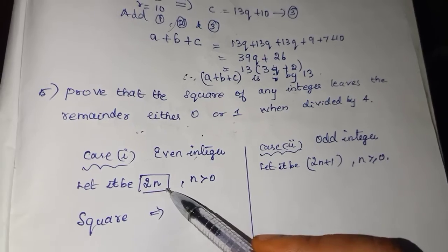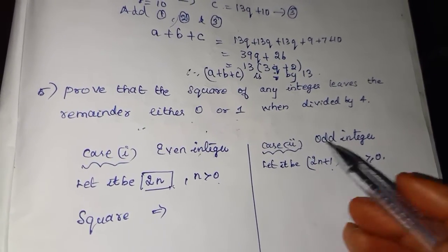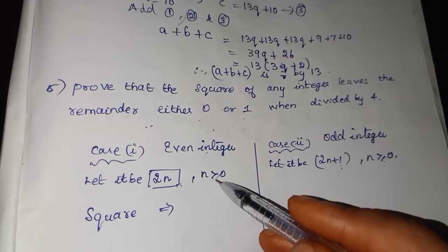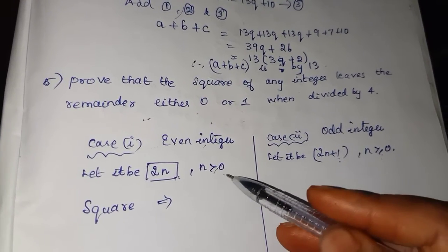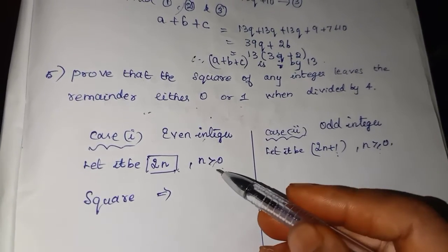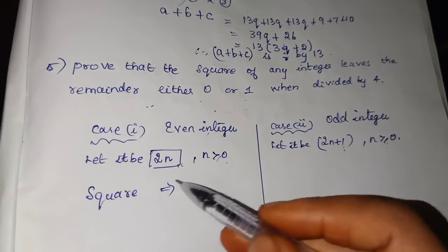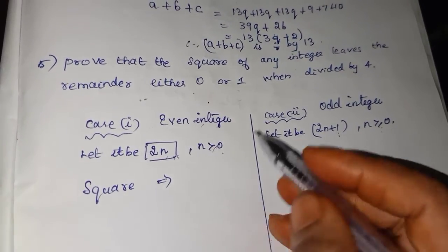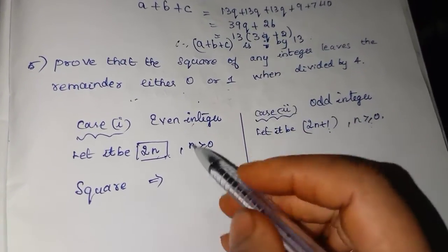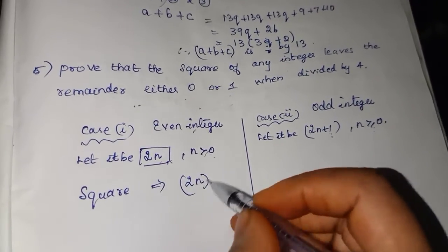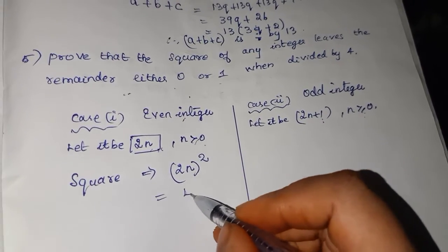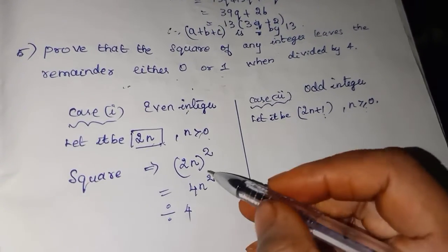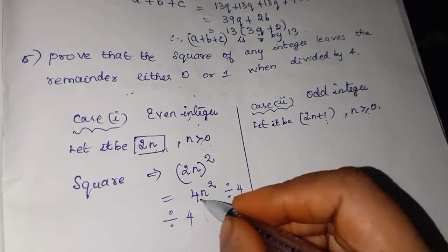Even integers can be written as 2n, and odd integers as 2n plus 1, where n is greater than 0. First, squaring the even integer: (2n) squared equals 2 squared times n squared, which gives 4n squared. Since 4 is a factor, the square of an even integer is exactly divisible by 4, leaving remainder 0.